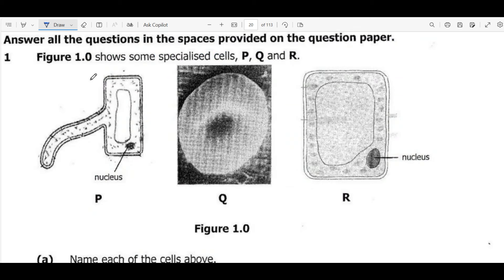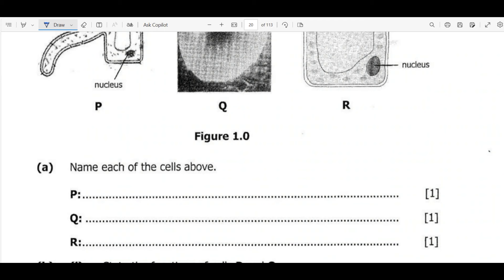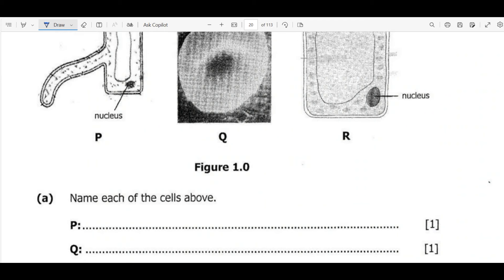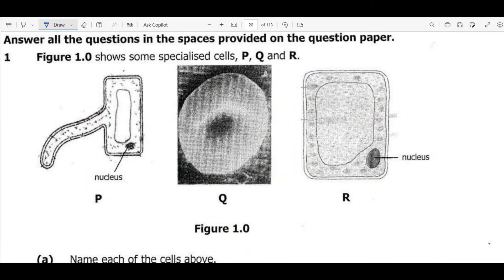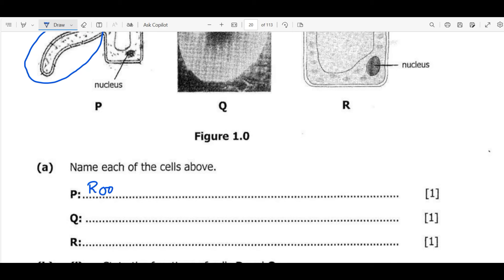We move on to another question. Figure 1.0 shows some specialized cells P, Q, and R. By now you should be able to identify cells based on their structure. For cell P, we have an elongated outgrowth, and the only cell with this structure is the root hair cell. Root hair cells are found on the tips of roots and their main function is to absorb mineral salts and water from the soil.